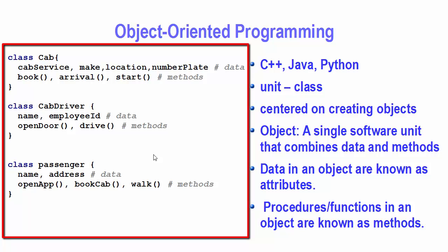A class can be created for any real-life object — a car, a motorbike, a book, an employee, or a person. A class refers to a blueprint in which we can have data and methods. For our Cab class, attributes could include: which cab service, the make of the cab (Toyota, BMW, Volkswagen), the current location, and the number plate so the passenger can recognize the cab.